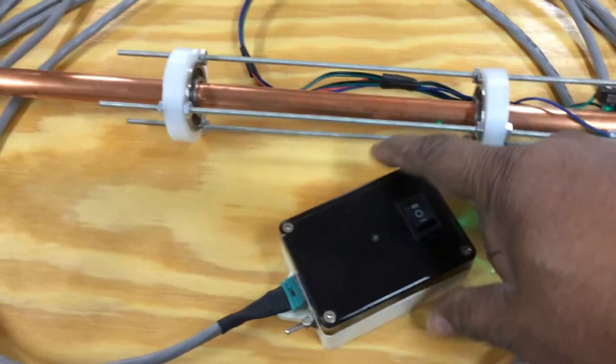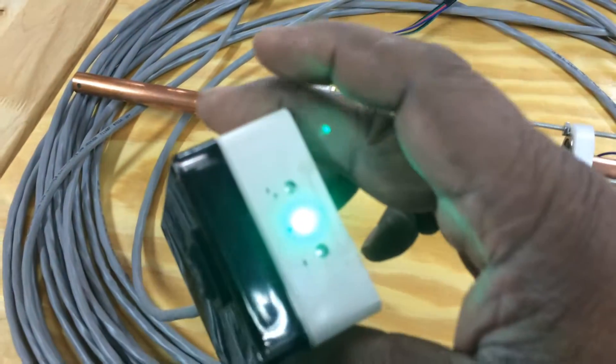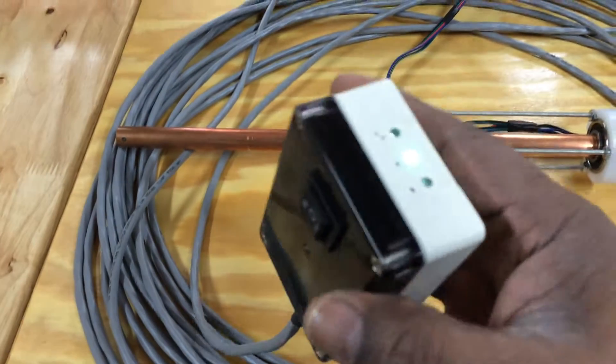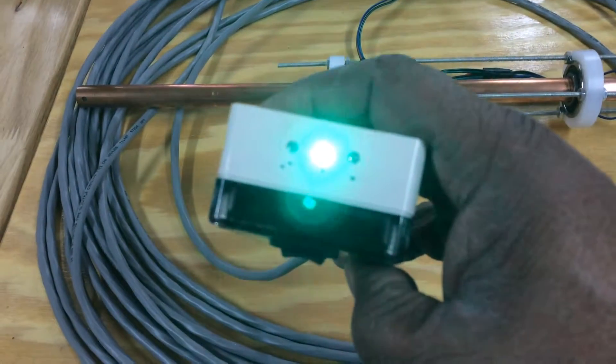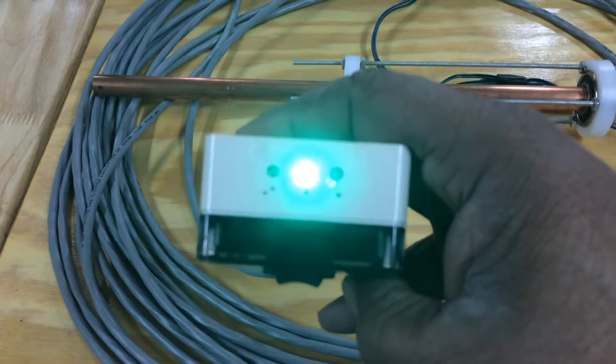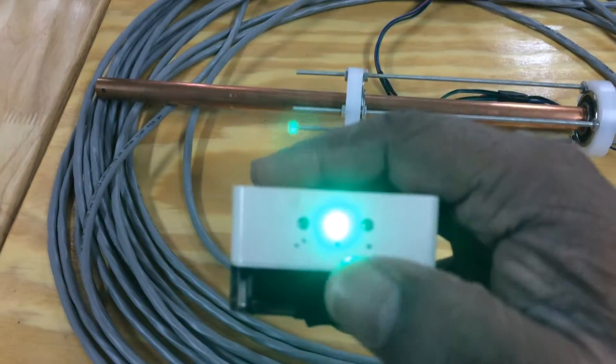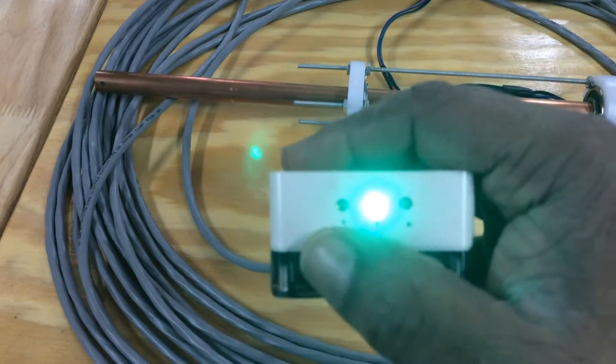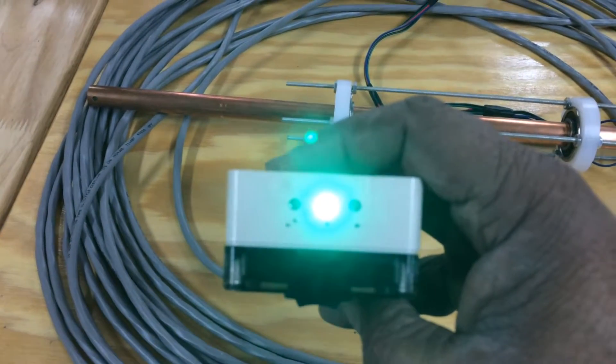The control box has a switch on it right here with a green light and two red lights. The green light indicates that the antenna is back in its neutral position, and each red light will indicate the end of travel in either direction.